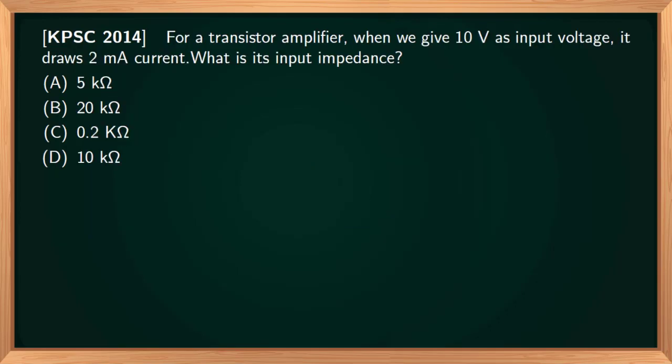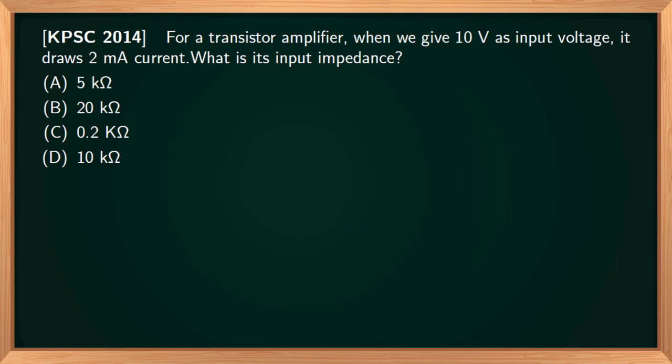For a transistor amplifier, when we give 10 volts as input voltage, it draws 2 milliampere current. What is the input impedance? Options: A, 5 kilo ohm; B, 20 kilo ohm; C, 0.2 kilo ohm; D, 10 kilo ohm. Now what is input impedance? For an amplifier with input voltage vi, if it takes a current ii and produces output voltage v0 and output current i0, input impedance is the impedance at the input terminals.